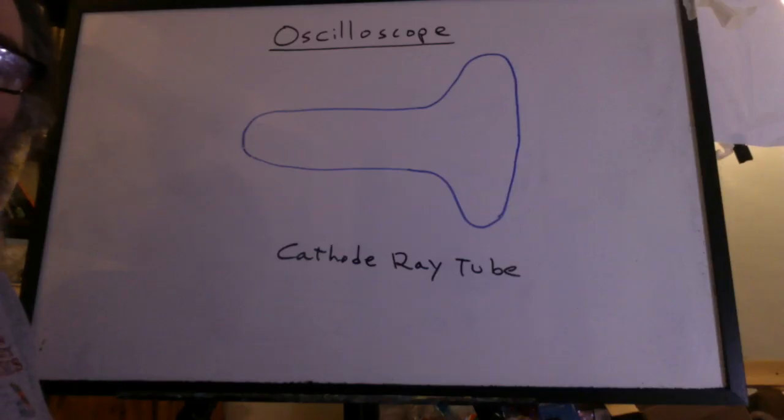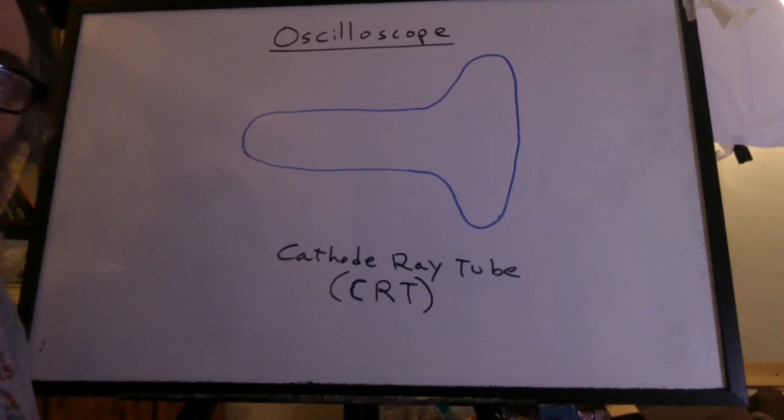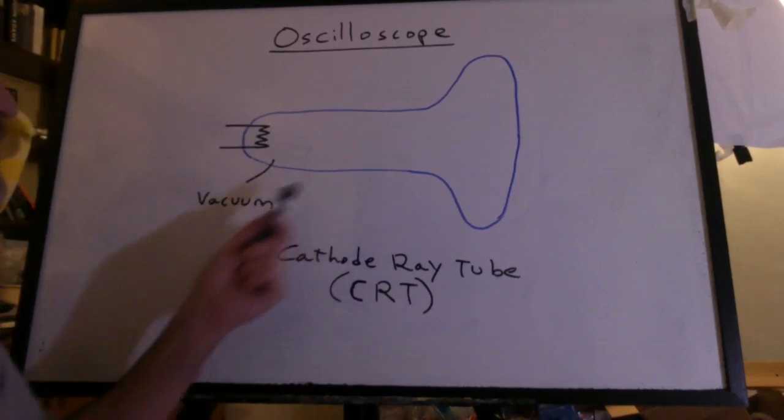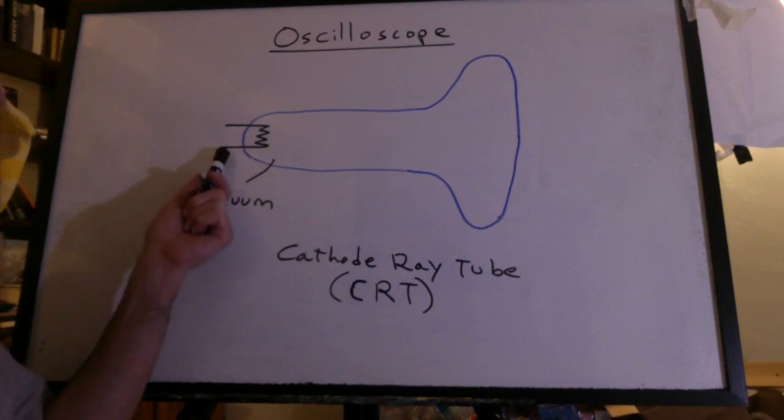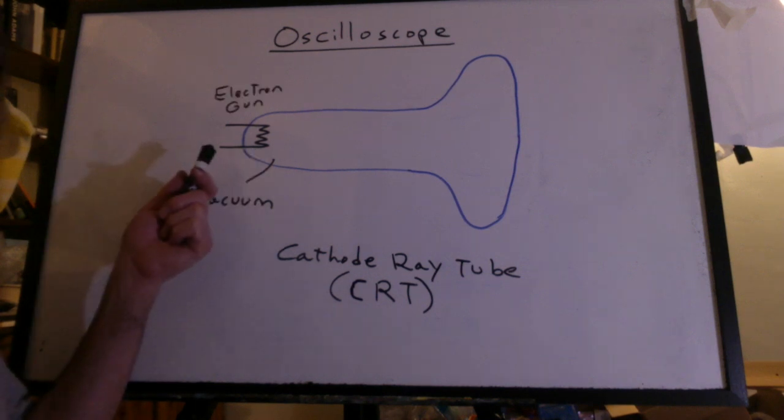So we'll diagram out an oscilloscope here. This is the cathode ray tube at the heart of the equipment, also known as a CRT. There's a vacuum inside the glass tube and there's a tungsten steel wire that, when it gets hot, emits electrons. It's known as the electron gun.